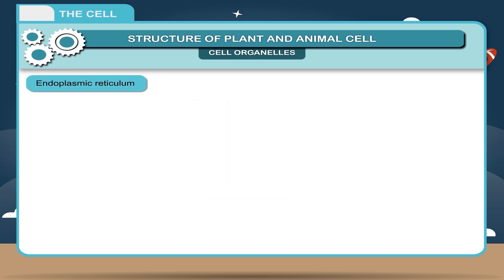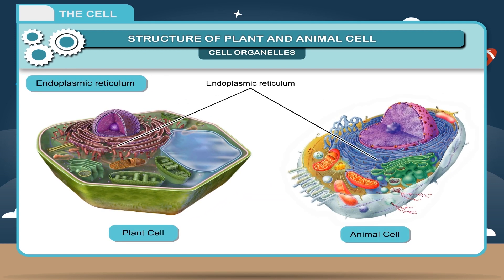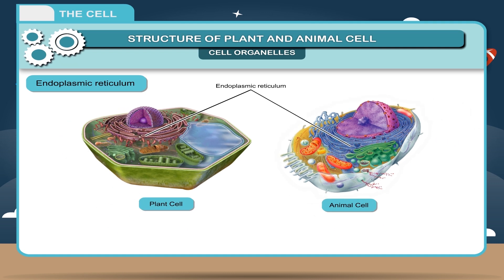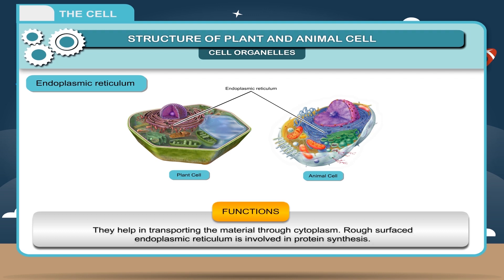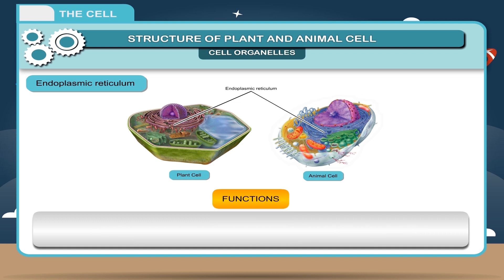Endoplasmic reticulum. These are interconnected hollow canals found between the nucleus and cell wall. The walls of the endoplasmic reticulum may be smooth or rough. They help in transporting material through the cytoplasm. Rough surfaced endoplasmic reticulum is involved in protein synthesis.